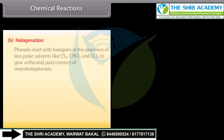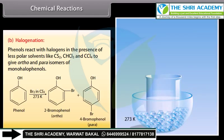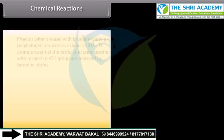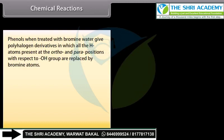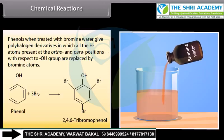Halogenation: Phenols react with halogens in the presence of less polar solvents like carbon disulfide, chloroform and carbon tetrachloride to give ortho- and para-isomers of monohalophenols. Bromine in carbon disulfide reacts with phenol and forms 2-bromophenol and 4-bromophenol. Phenols when treated with bromine water give polyhalogen derivatives in which all the hydrogen atoms present at the ortho- and para-positions with respect to hydroxyl group are replaced by bromine atoms, forming 2,4,6-tribromophenol.